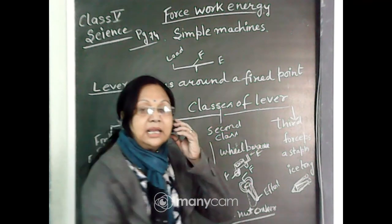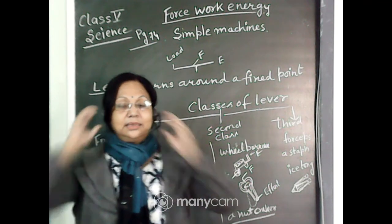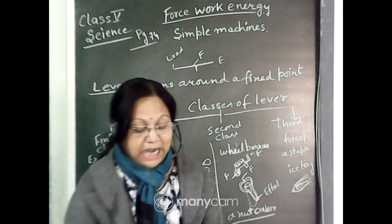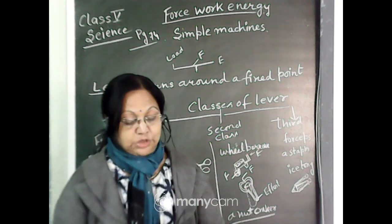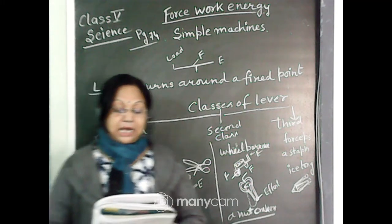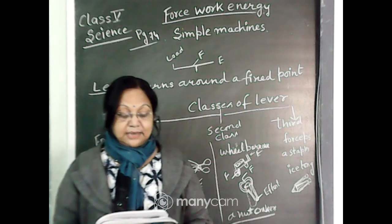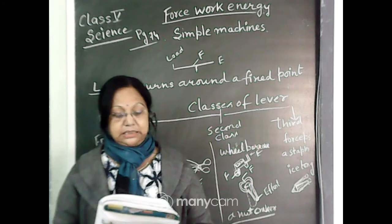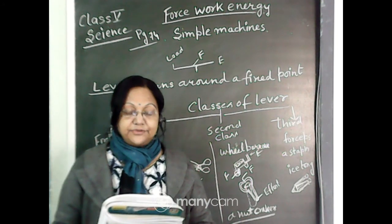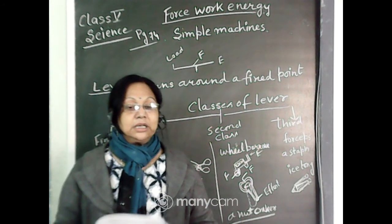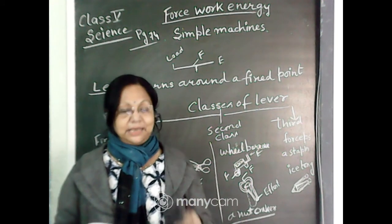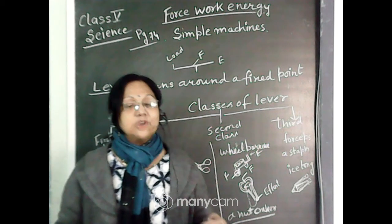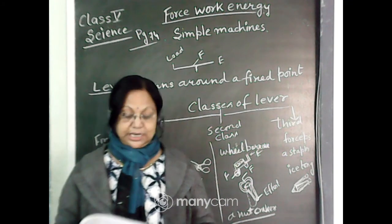Today we will study about the simple machine and how many types there are. A simple machine is a device that makes our work easier and faster. Examples include scissor, knife, tweezers, tongs, cutter, nut cracker, and bottle opener — these are all kinds of simple machines.